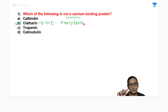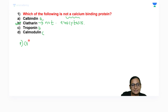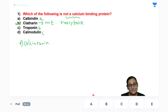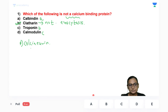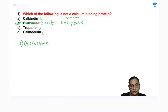Now let me bring a twist. If the options are calcineurin, calbindin, troponin, calmodulin, or calcineurin — which is not a calcium binding protein? We've already finished with clathrin; I told you clathrin is associated with exocytosis, so I am reframing the question.